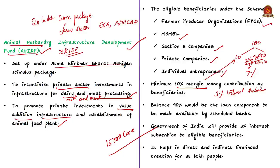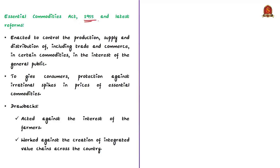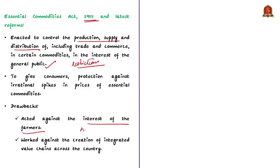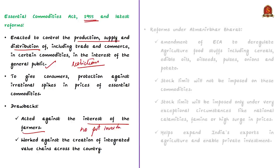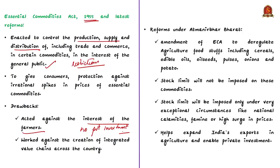Further reforms under this package include amending the Essential Commodities Act of 1955. This act was enacted to control the production, supply and distribution of certain commodities important in the interest of the general public. Whenever a commodity is branded as an essential commodity, government puts restrictions like pricing and hoarding. Though this act was brought in the interest of the larger public, it acted against the interest of farmers. Because of serious restrictions on sale and storing of commodities, farmers were losing income and no large private investment was made in this sector. Now under Atmanirbhar Bharat, the act is going to be amended to enable better price realization for farmers by attracting investments and making the agriculture sector more competitive.